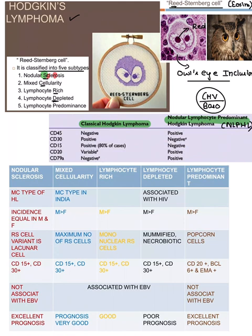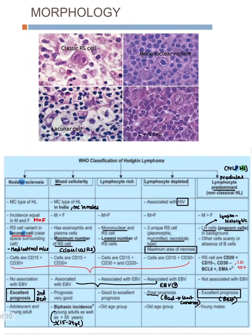Nodular sclerosis is the most common type of Hodgkin's lymphoma overall. Mixed cellularity is the most common type in India and more common in males. Lymphocyte depleted is associated with HIV — HIV depletes you. Then there is lymphocyte predominant. Nodular sclerosis is equally common in males and females; all the rest are more predominant in males.